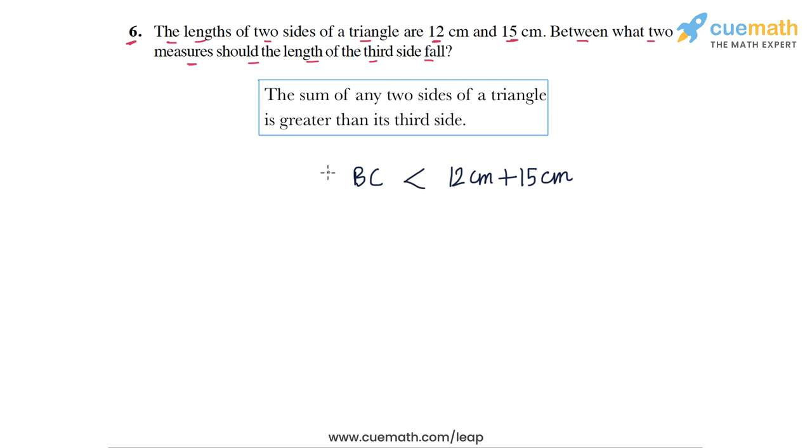BC can go down to as low as the difference of these two lengths, so 15 centimeters minus 12 centimeters, but BC must always stay greater than this difference.